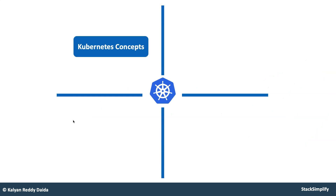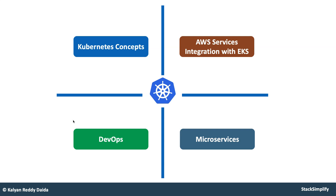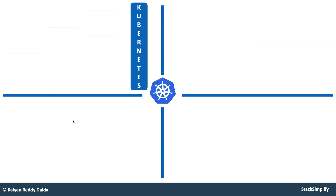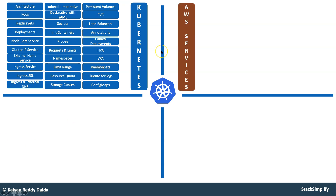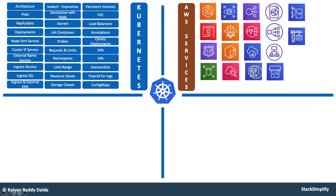We have divided the topics into four major sections: Kubernetes concepts, AWS services integration with EKS — meaning what all AWS services we can use in relation with Elastic Kubernetes Service — DevOps concepts, and microservices concepts. Close to 30 Kubernetes concepts are covered as part of this entire course, and whenever we are writing YAML declarative files we are going to do live template writing sections wherever required. We also cover integration with close to 18 or 19 AWS services in relation with EKS.